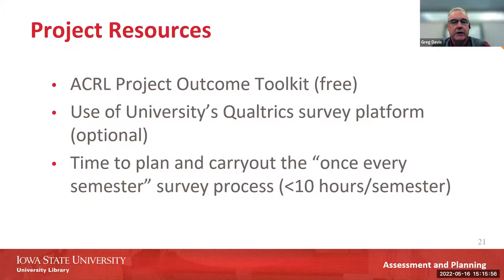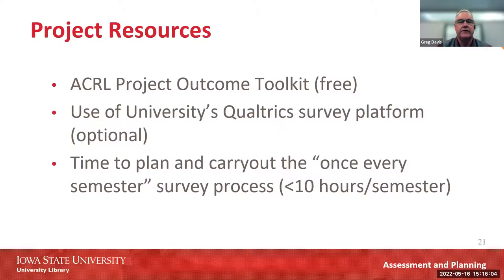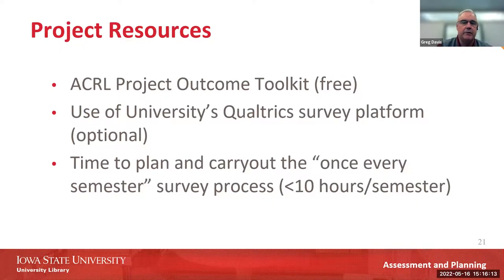The Project Outcome work is really pretty simple. You can use the ACRL Project Outcome toolkit to get started — it's all free. We use Qualtrics, but you don't need to; you can use the surveys built into the toolkit. The time commitment was pretty minimal — I would estimate less than 10 hours a semester to set up and run the Project Outcome surveys.